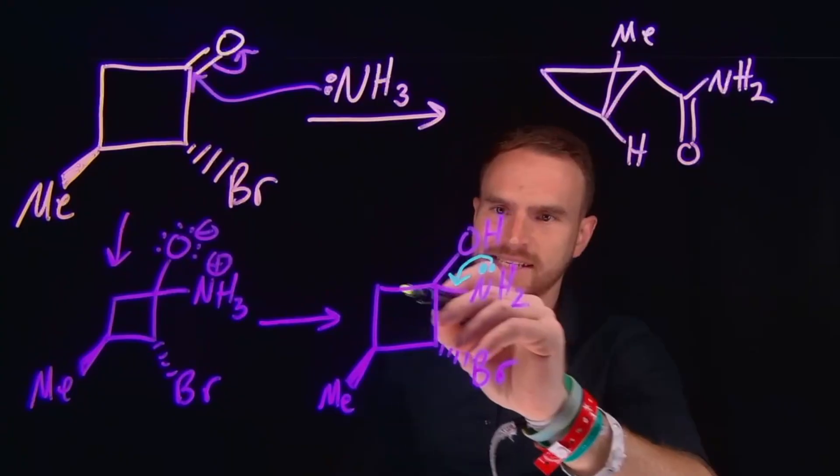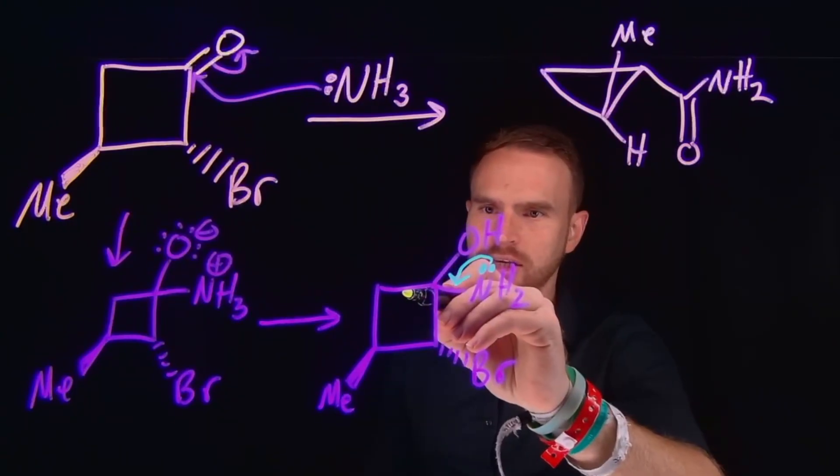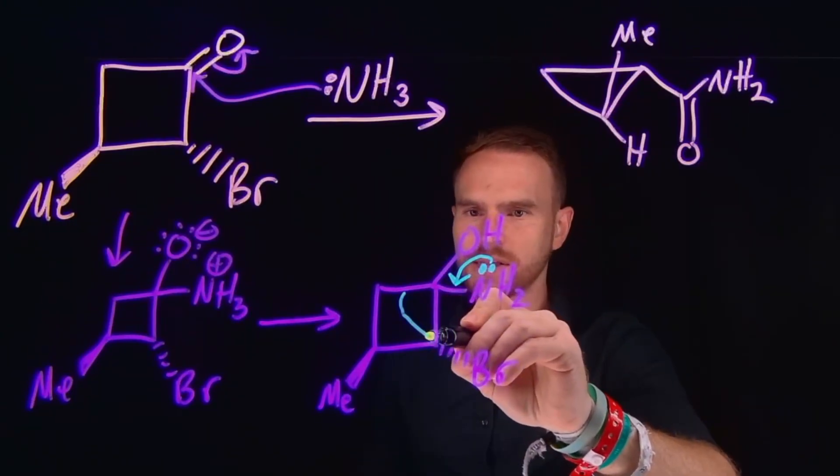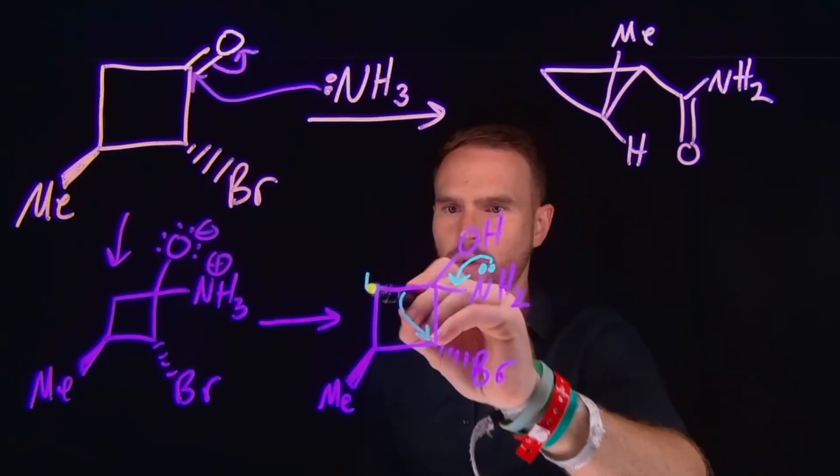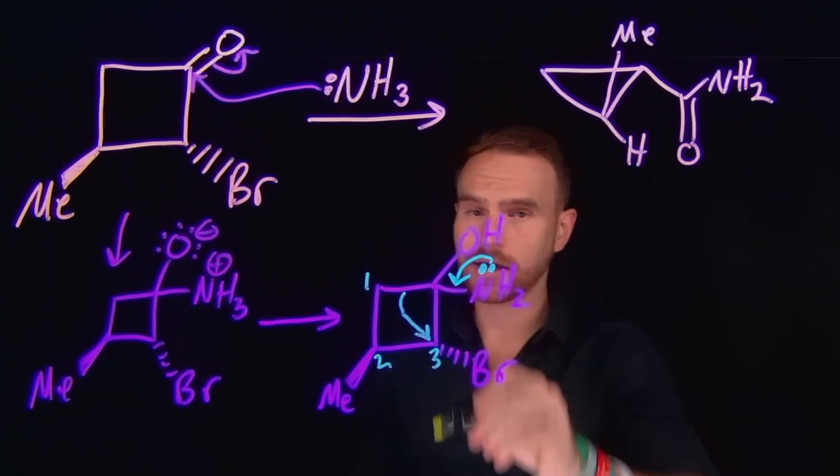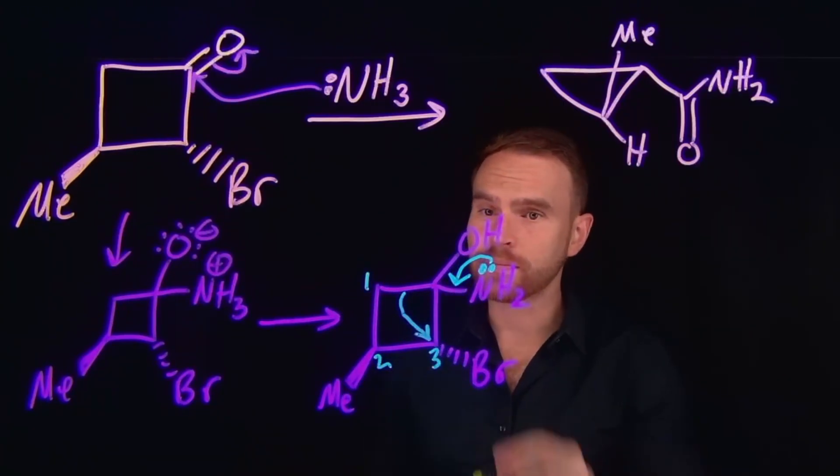Where the electrons contained between these two carbons will actually come down, forming a new carbon to carbon bond between one, two, and three carbons. And that's actually how we form the cyclopropyl ring.